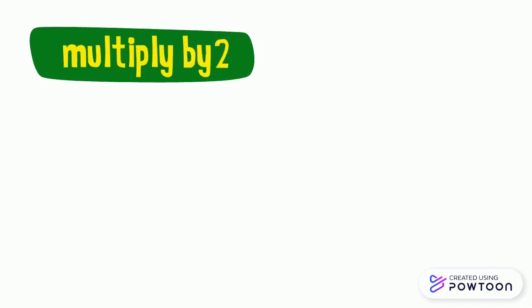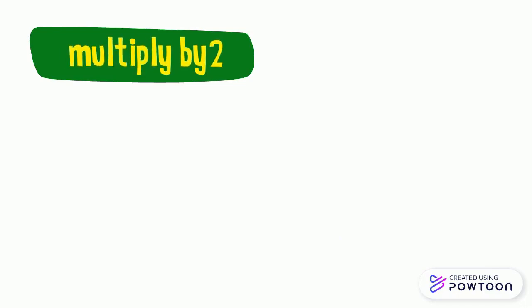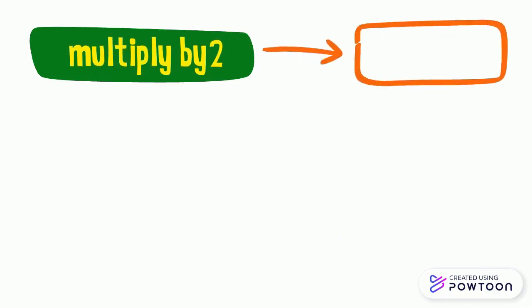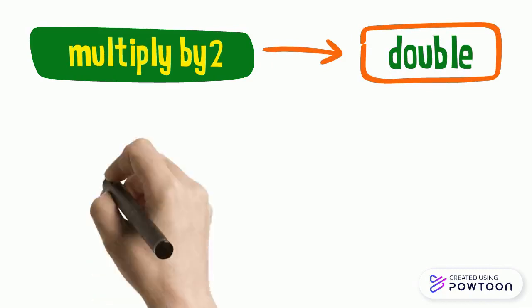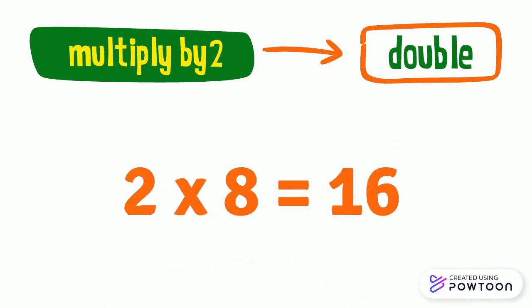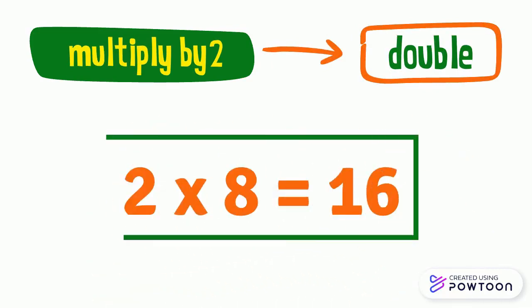Notice that when we want to multiply a number by 2, it is enough to find the double of this number. For example, 2 times 8 equals 16, because the double of 8 is 16.